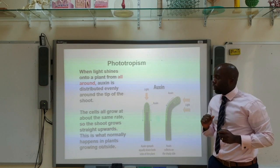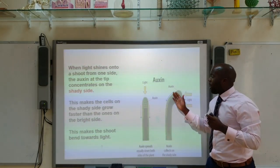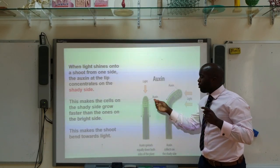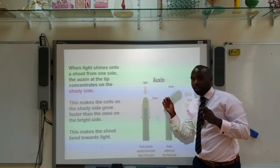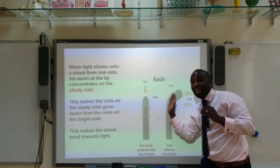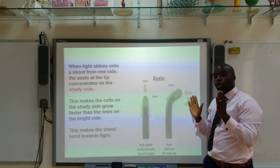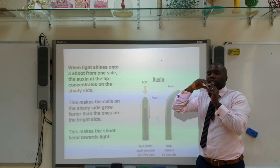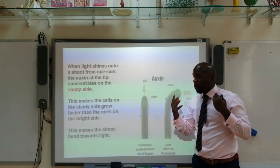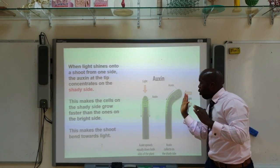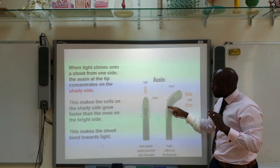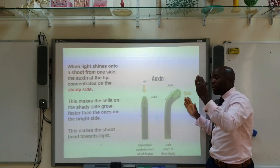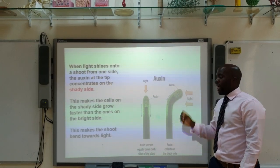If light shines onto a plant from one direction, this causes the auxin to concentrate on the shaded side. In shoots, auxin causes the cells to elongate — to lengthen and grow more. So if auxin moves to the shaded side, those cells elongate at a faster rate compared to the lit side. Because those cells are growing faster, the plant bends towards the light.